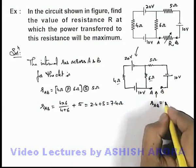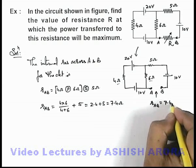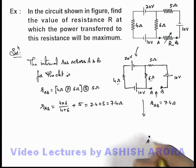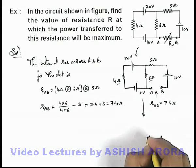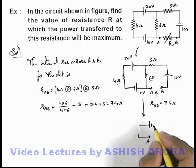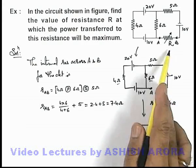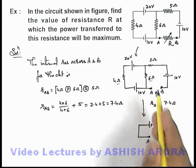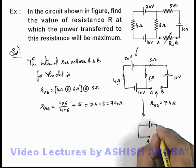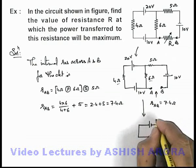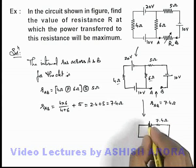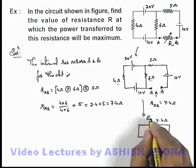So this internal resistance of the circuit will be 7.4 ohm, which means the circuit can be redrawn with terminals A and B, an equivalent EMF, and the internal resistance of 7.4 ohm connected across A and B, along with some equivalent EMF.